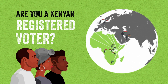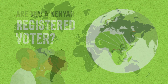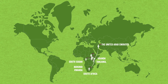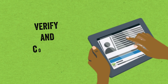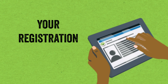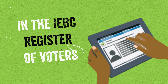Are you a registered Kenyan voter residing in Tanzania, Uganda, South Sudan, Rwanda, Burundi, South Africa, United Arab Emirates, Qatar, United Kingdom, Germany, USA, or Canada? It's time to verify and confirm your registration details in the IEBC Register of Voters.